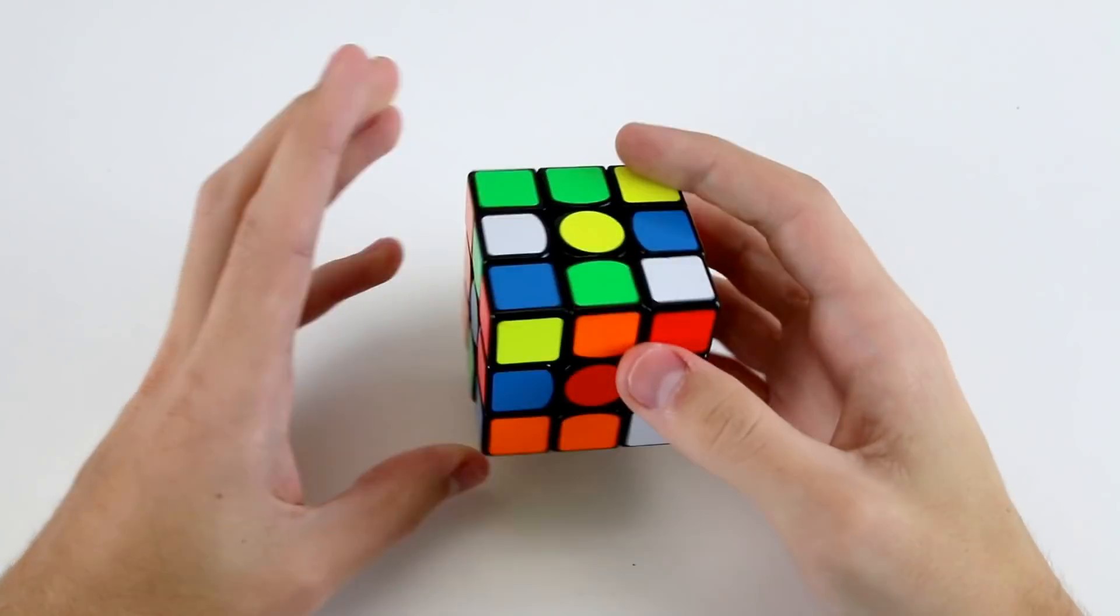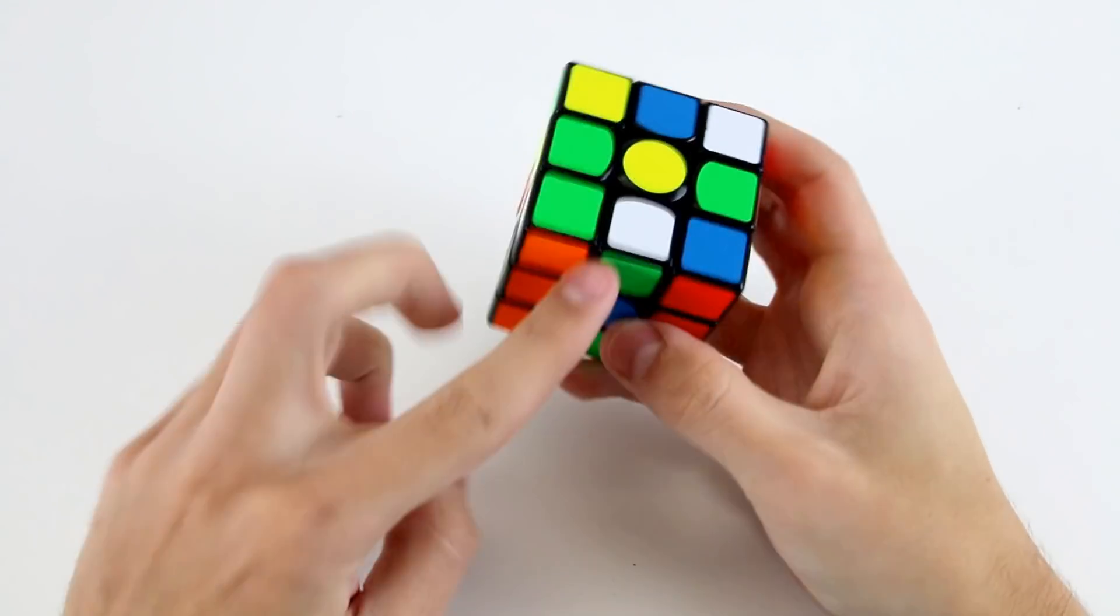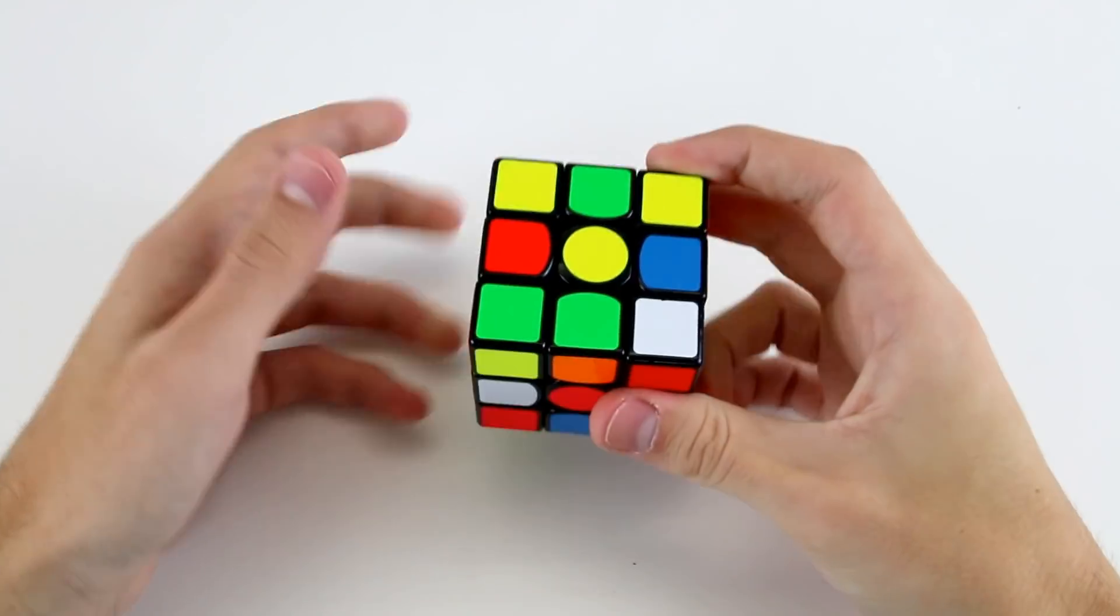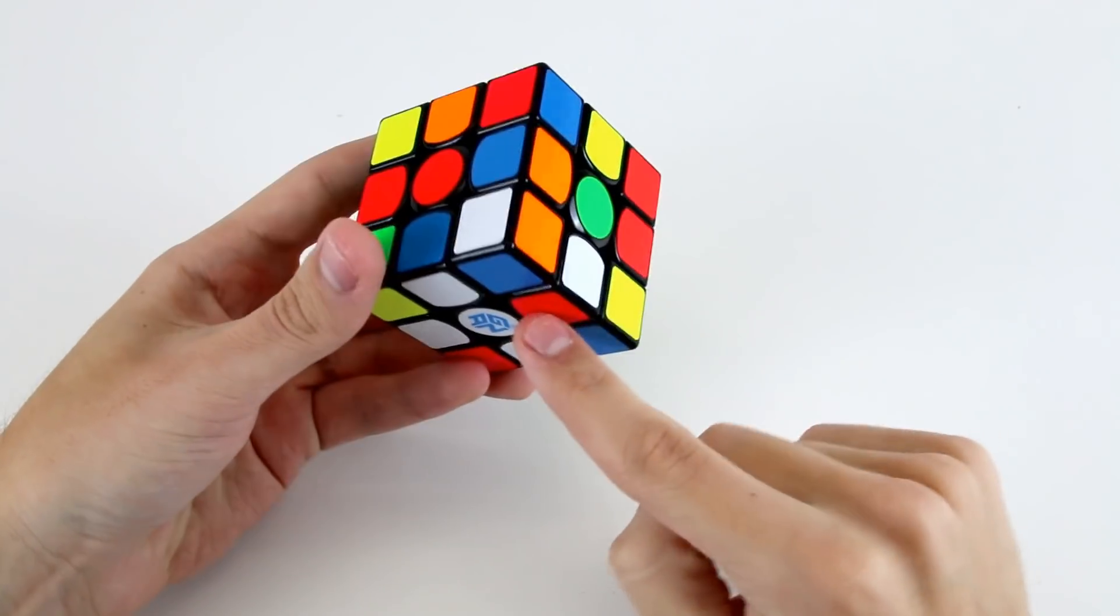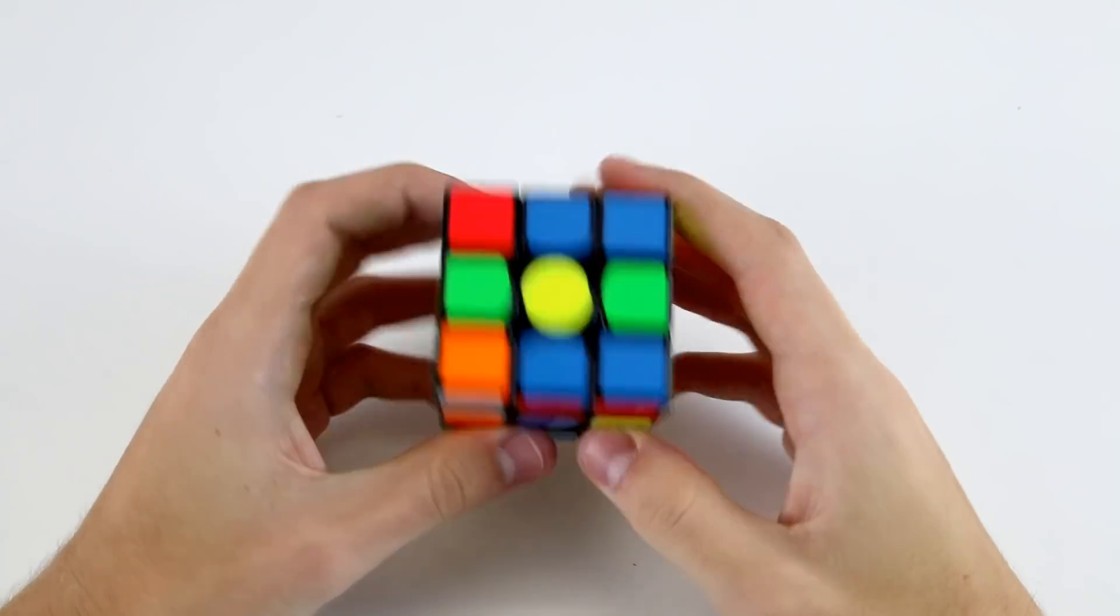Probably what I would do is rotate over to this position and do something like L2 prime D prime L to insert these two. So go L2 prime D prime L and then to finish off the cross and flip this one I would go R Y U prime R like that.